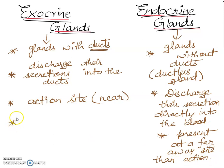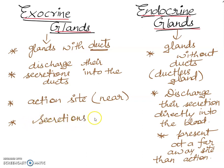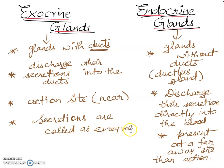The fourth point: the secretions from exocrine glands are called enzymes. And the secretions from endocrine glands are called hormones.